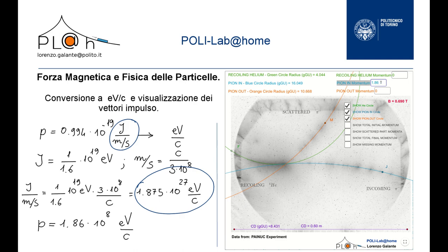Note that the values I've written and am going to write are just for demonstration purposes. Assuming the helium momentum is 0.9 × 10⁸ eV/c and the scattered pion momentum is 1.1 × 10⁸ eV/c, once entered we can ask the application to visualize the vectors representing the momenta of the particles. By clicking on this box, the total initial momentum vector will appear, corresponding to the momentum of the incoming pion alone, as the helium momentum before the collision is negligible. The vector turns out to be tangent to the trajectory of the pion at the vertex of interaction.